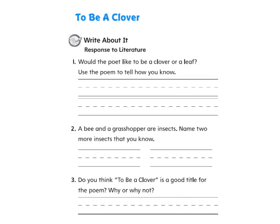Here we get to respond to the poem 'To Be a Clover.' Would the poet like to be a clover or a leaf? Use the poem to tell how you know. Being a grasshopper or insect — name two more insects that you know. Do you think 'To Be a Clover' is a good title for the poem? Why or why not? You can look back into your poem to get the best possible answer and to help with the spelling. Just do your best.